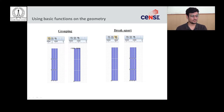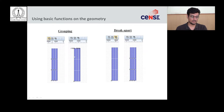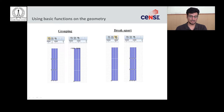There are two more options: grouping and breaking apart. Grouping: if you have nine rectangles as separate entities, select them all and click the group option to make them a single group. Before grouping, nine separate nodes are visible; after grouping, it becomes a single node. To break them apart again, select the grouped design and use the break apart option, which returns them to nine separate entities.